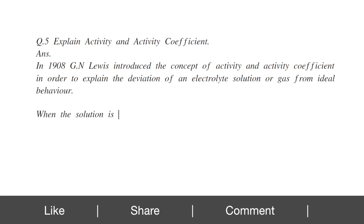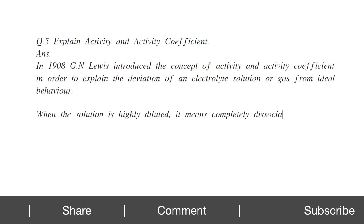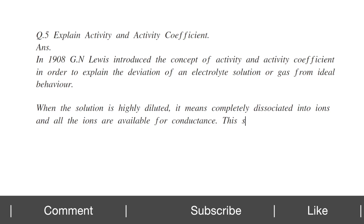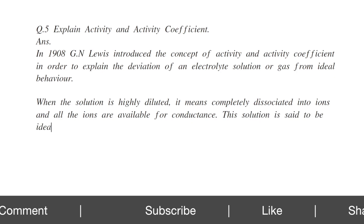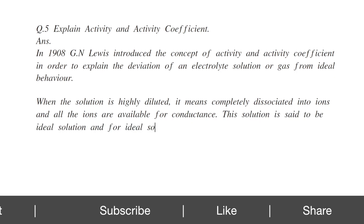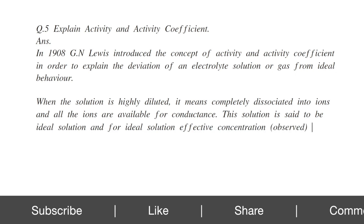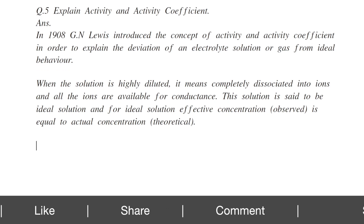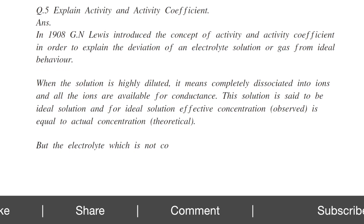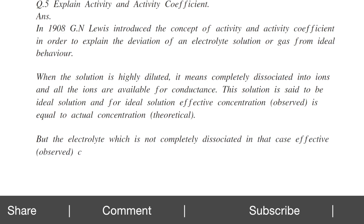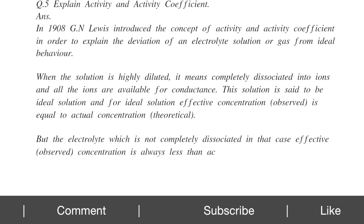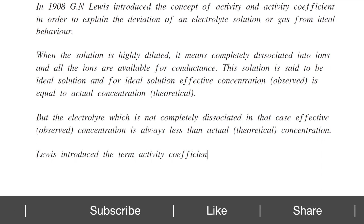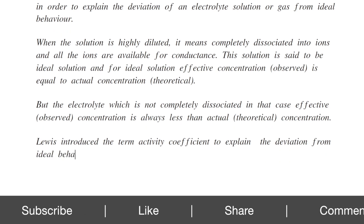When the solution is highly diluted — meaning completely dissociated into ions and all ions are available for conductance — this solution is said to be ideal. For ideal solutions, the effective concentration (observed concentration) is equal to the actual concentration. But for an electrolyte that is not completely dissociated, the effective concentration is always less than the actual concentration. Lewis introduced the term Activity Coefficient to explain this deviation from ideal behavior.